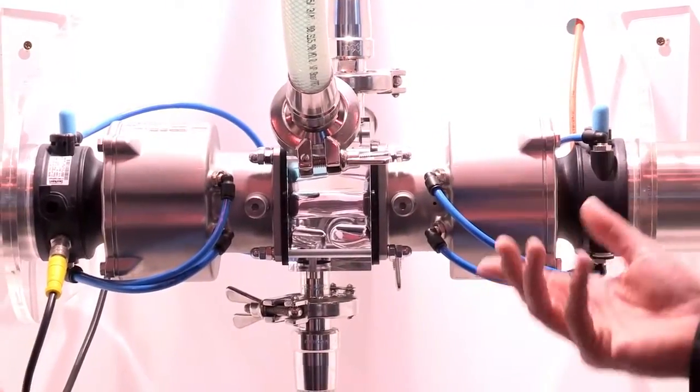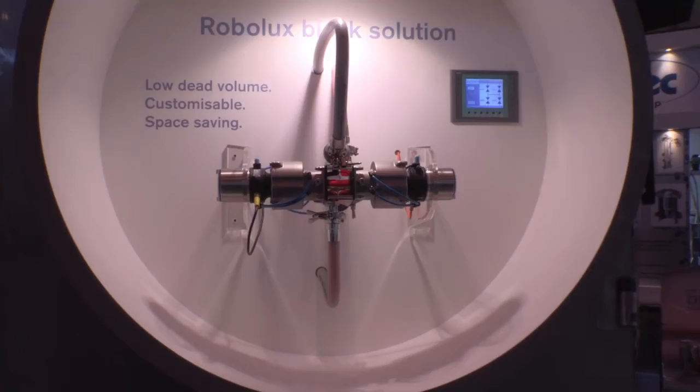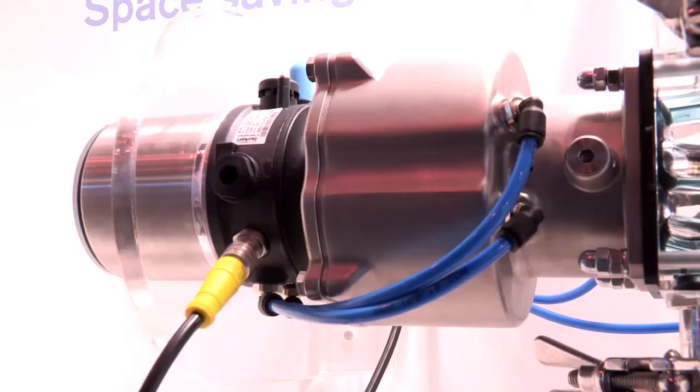The double seats Robolux provides minimum dead space in a block solution. It does not only bring the advantage that you have less internal space, so you don't have that much waste on your products. The products we are using in these types of installations are quite expensive.